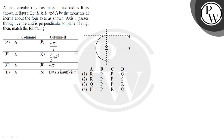Hello students, let's read the question. A semicircular ring has mass M and radius R as shown in the figure. Let I1, I2, I3, and I4 be the moment of inertia about the four axes as shown. Axis 1 passes through the center and is perpendicular to the plane of the ring. Match the following.